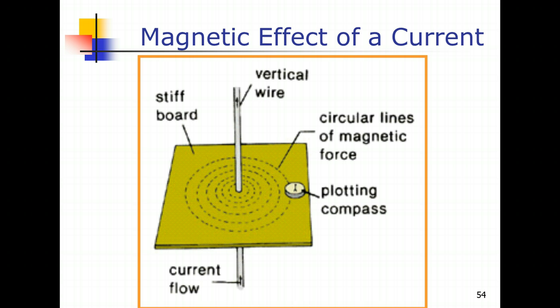There are two ways. The first is by using iron filings, and the second method is to make use of plotting compasses, which — by taking note of the direction of the needle — will tell us the direction of the magnetic field lines around a permanent magnet. Now, coming back to this slide, we are using that second method: placing plotting compasses around an electrical wire when current is flowing through it.